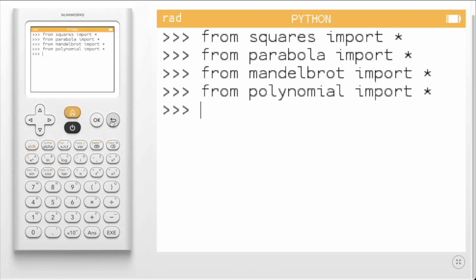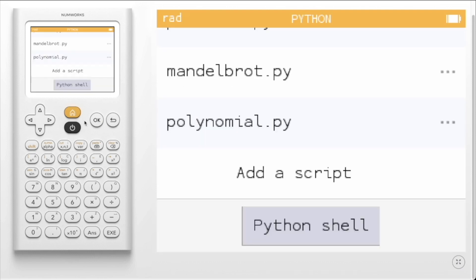It is possible to stop a script from being automatically imported into the shell. To disable a script from being imported, we will exit the Python shell by clicking the back key. Navigate up to the script and click OK on the ellipsis to the right of its name.